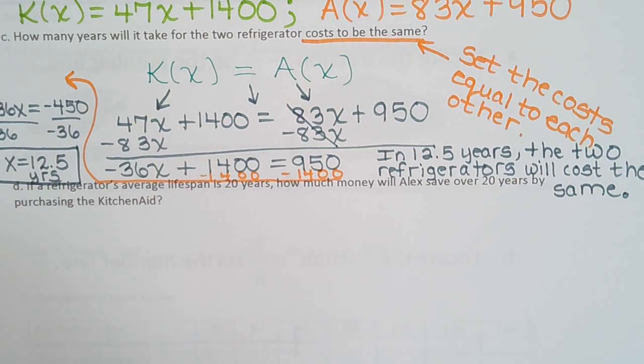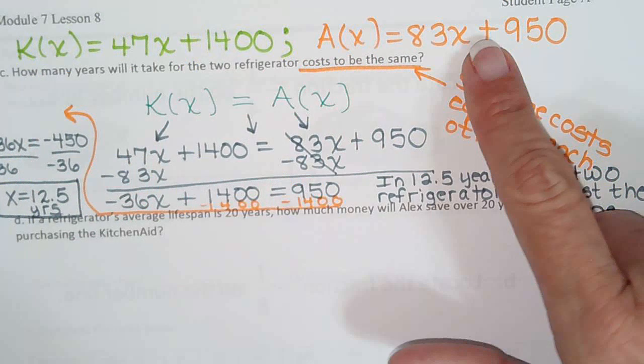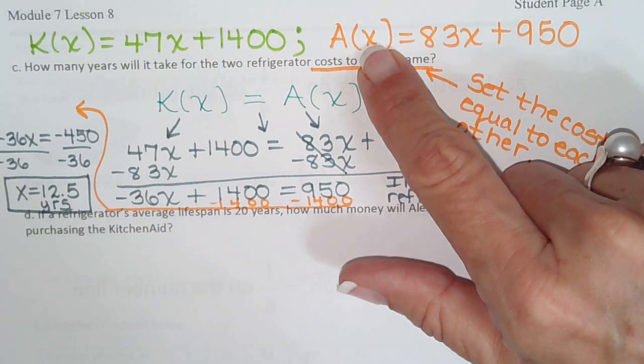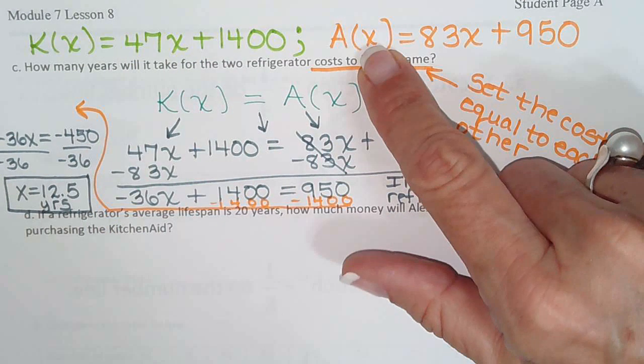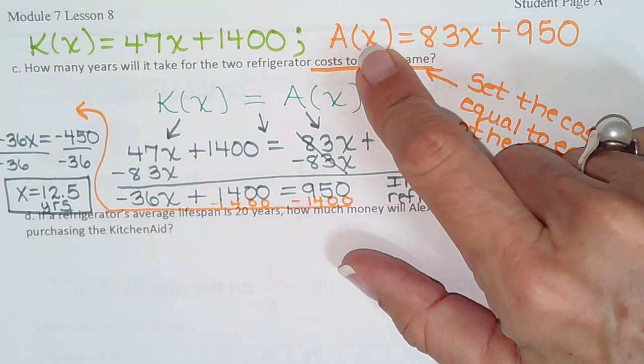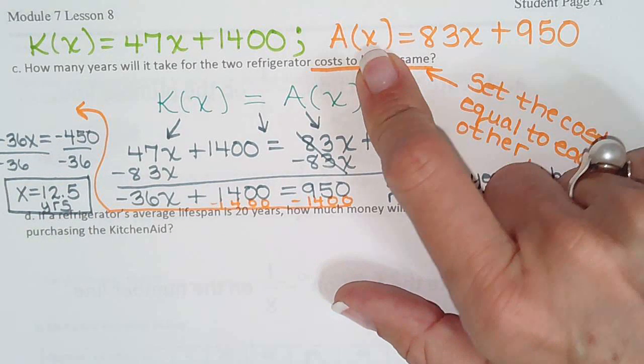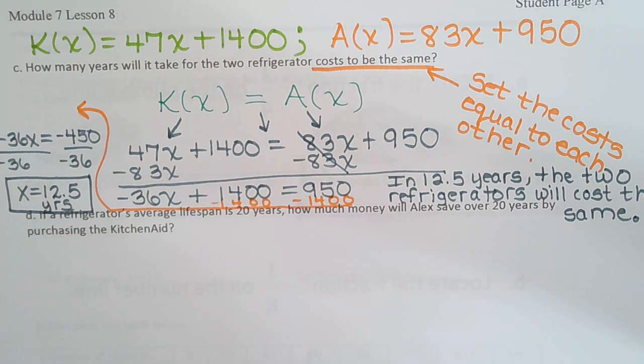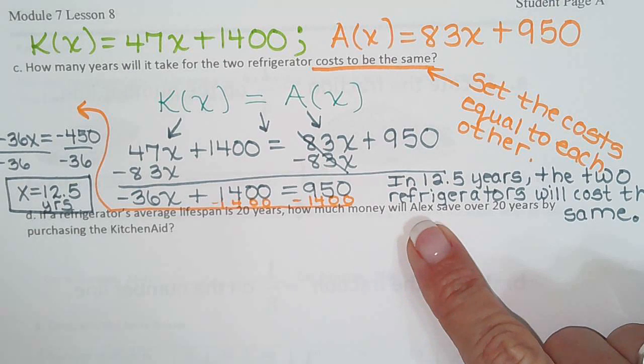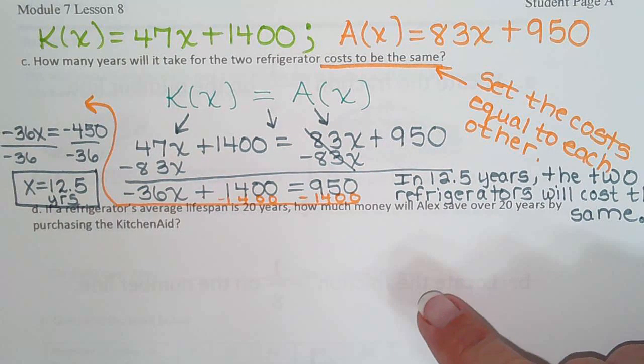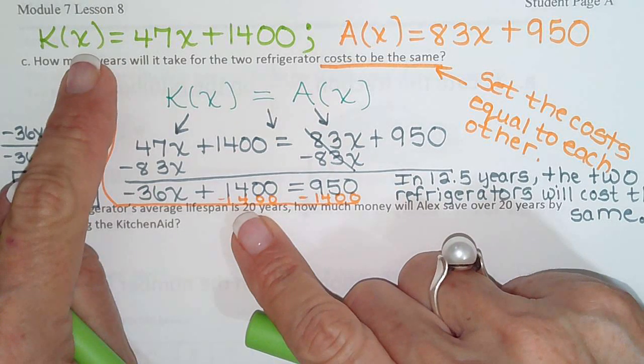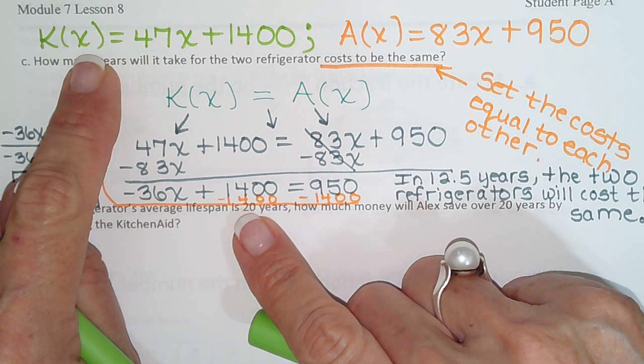Well, the easiest way to do that is use your two equations. So find out how much the KitchenAid costs over 20 years. Find out how much the Amana costs after 20 years. And then it says how much money will he save? That means we have to subtract the two answers.